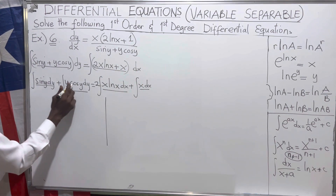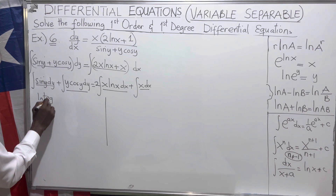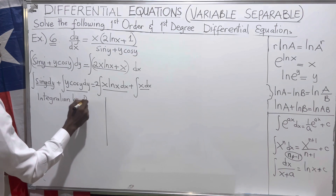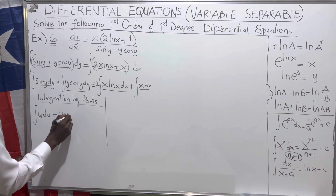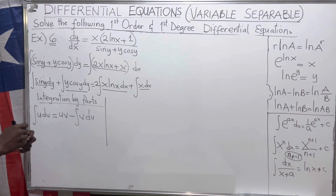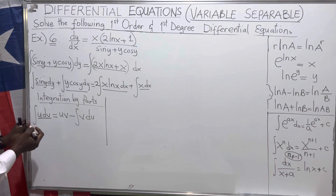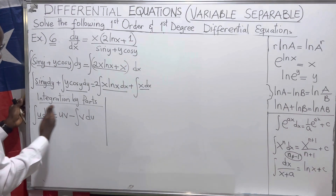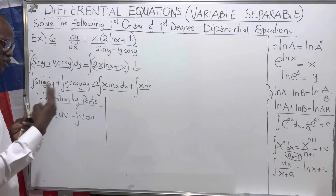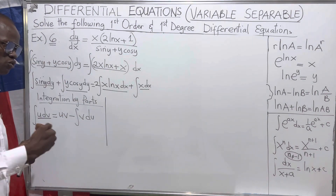The integration by parts formula is: the integral of u dv equals u·v minus the integral of v du. If you have an integral where one expression can be differentiated and the other integrated, you can carry on integration by parts. The expression that reduces when you differentiate is the one you consider as u.